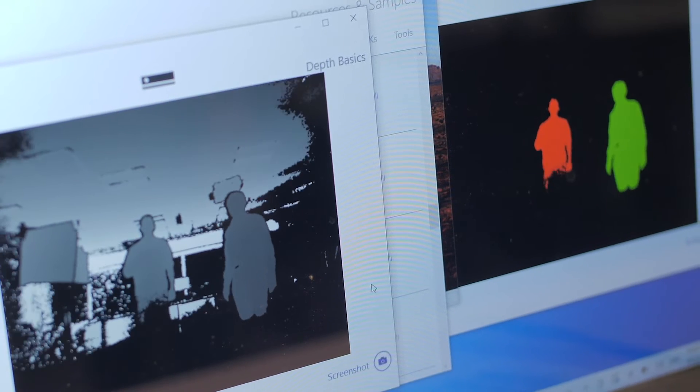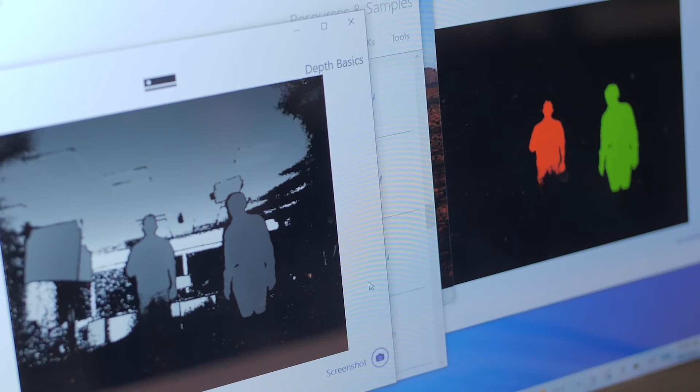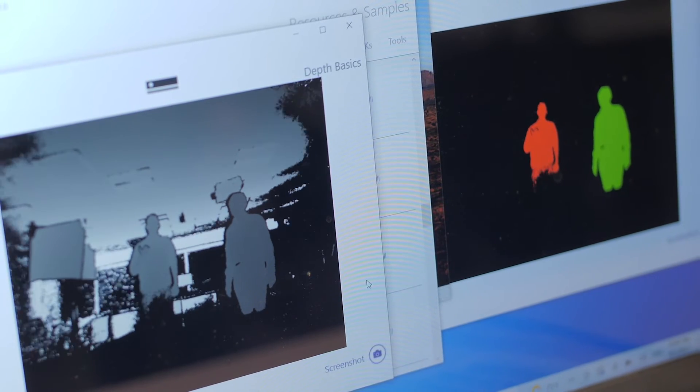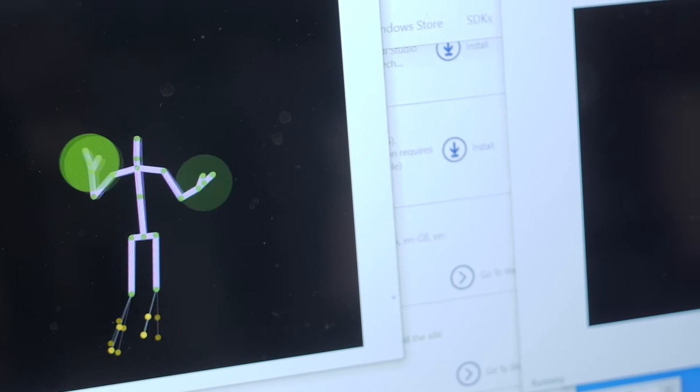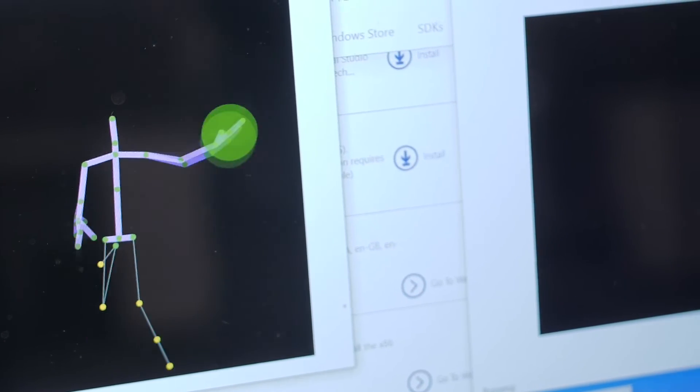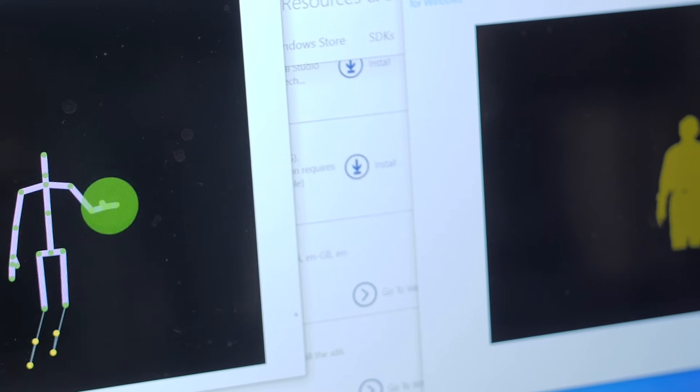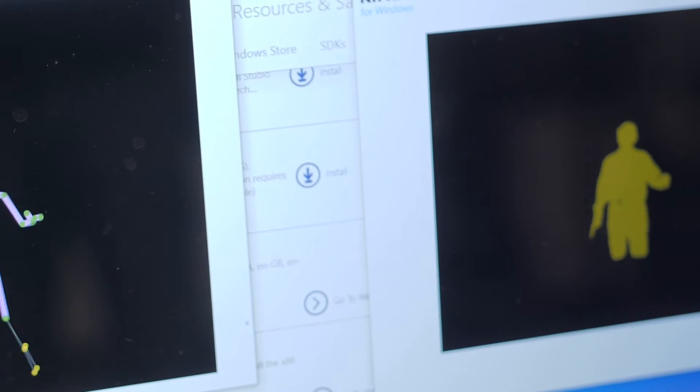The Kinect version 1 detects distortions in the shape of the speckle pattern for discerning movement and depth. Once it decides it sees a figure, it compares what it sees to a database of typical human movements to construct its best guess as to the shape and movements of people in its camera field of view. The result is a stick figure, which is normally used as the basis for an avatar in Kinect gaming environments.